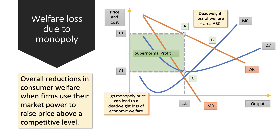W stands for welfare loss due to monopoly. Welfare loss is a deadweight loss of welfare when firms use their market power to increase and then keep the price above a competitive level. In our monopoly diagram, the welfare loss is the area A, B, C — because at point B that's where price equals marginal cost. So the monopoly charges a higher price and produces a lower output than the allocatively efficient output.